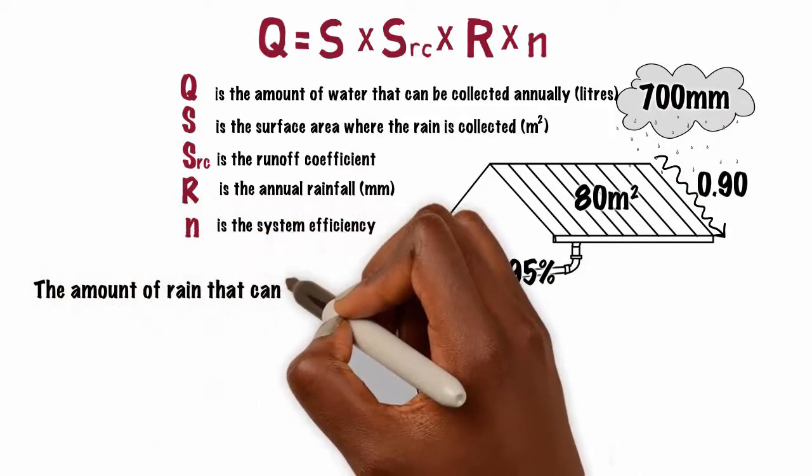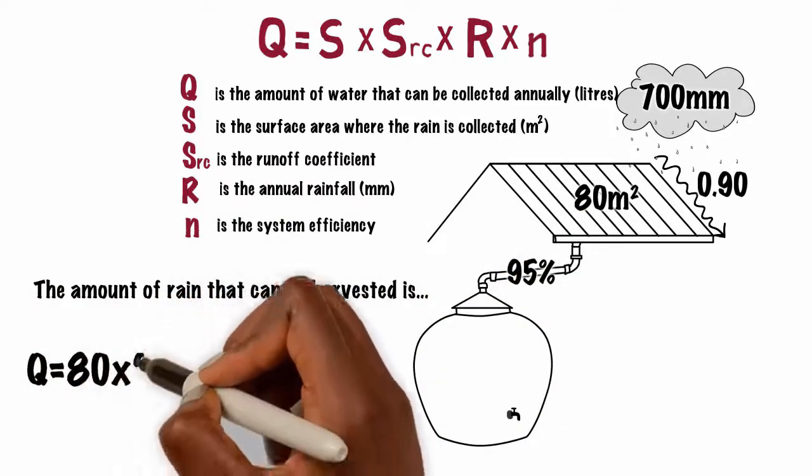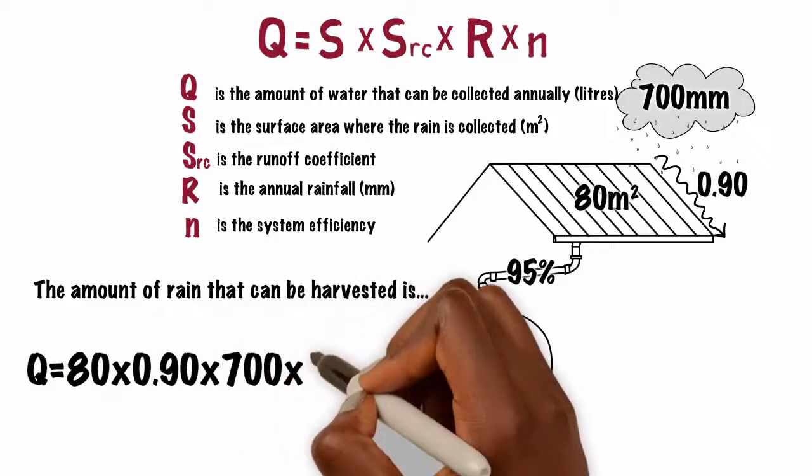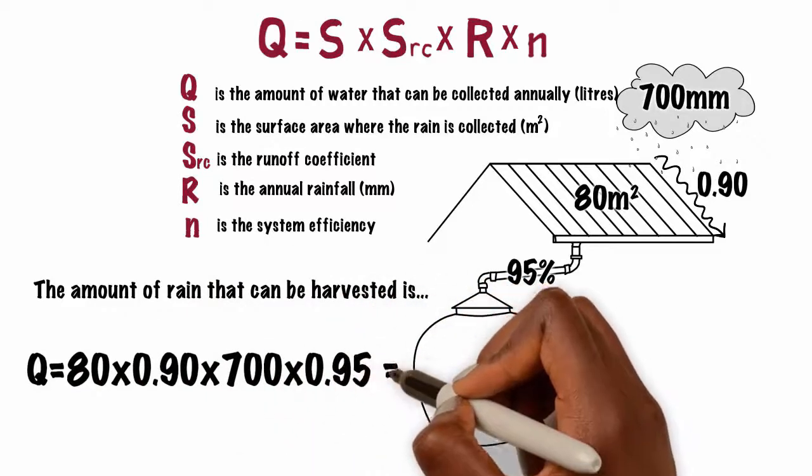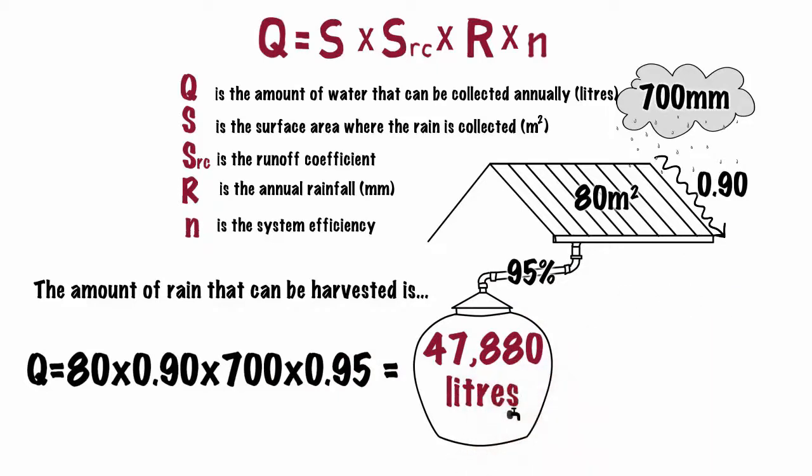then the amount of rainwater that can be harvested is Q equals 80 times 0.9 times 700 times 0.95, which equals 47,880 liters.